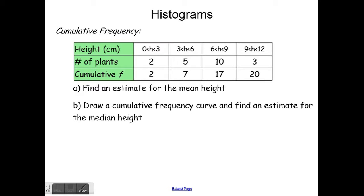I mentioned cumulative frequency last time and showed roughly how the curve looks. Now I'm going to go through an actual example and show you how to find the mean, median, and so on. The example uses height in centimeters of plants: ranges 0–3, 3–6, 6–9, and 9–12 centimeters, with frequencies 2, 5, 10, and 3. Cumulative frequency means you add each frequency to the total before it.